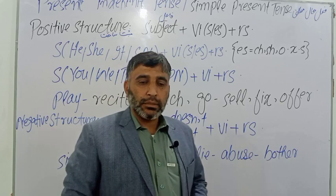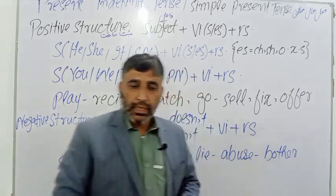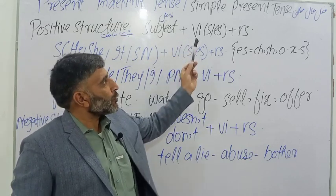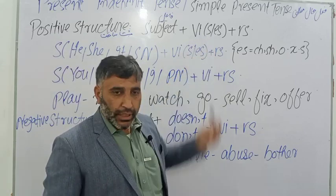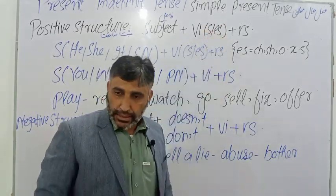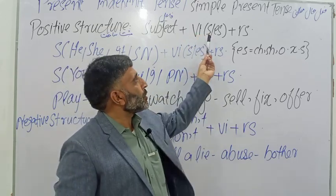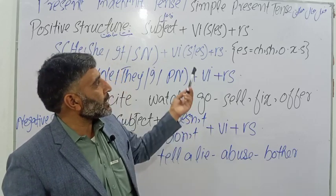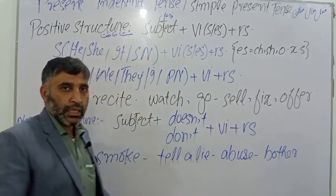When the subjects are he, she, it, or a singular noun — he for male, she for female, it for non-living things, and singular nouns like Bilal, Arshad, Ahmad, Khalid — in this case we add S or ES with the verb first form. We use ES when a verb ends with CH (e.g., 'watch'), SH (e.g., 'push'), O (e.g., 'go'), X (e.g., 'fix'), or SS (e.g., 'pass'). For all other endings, we simply add S.